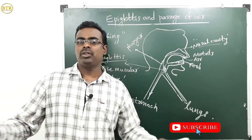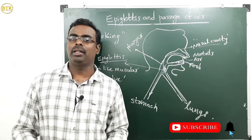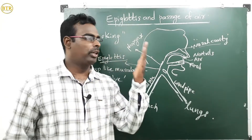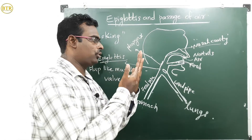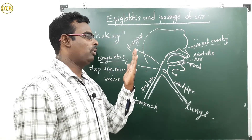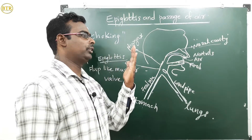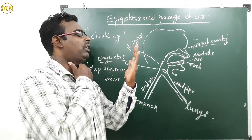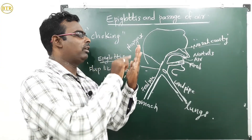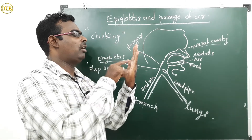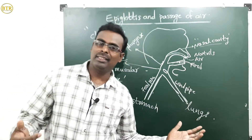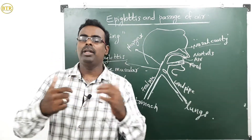We can understand the function of epiglottis through an activity. Keep your palm in front of your nose and breathe out — you can feel air touching the palm. Now take a piece of apple, keep it in your mouth, and start chewing. Touch the throat with your fingers, then swallow the food. When you are swallowing, observe whether air is touching the palm or not. When you swallow the food, air is not touching the palm — that means breathing is stopped. This is the function of the epiglottis.